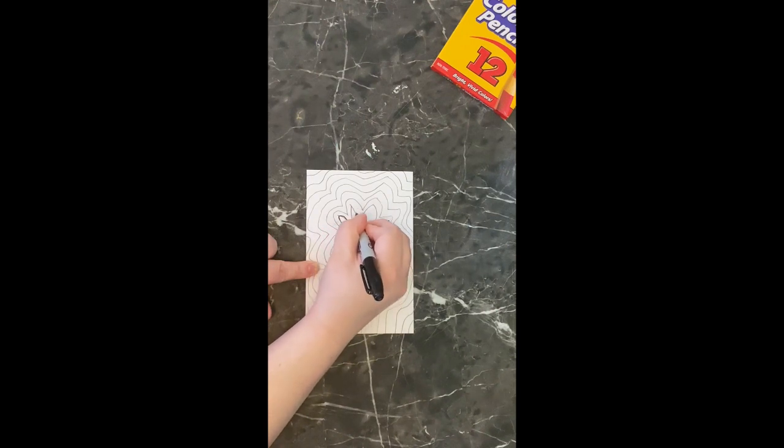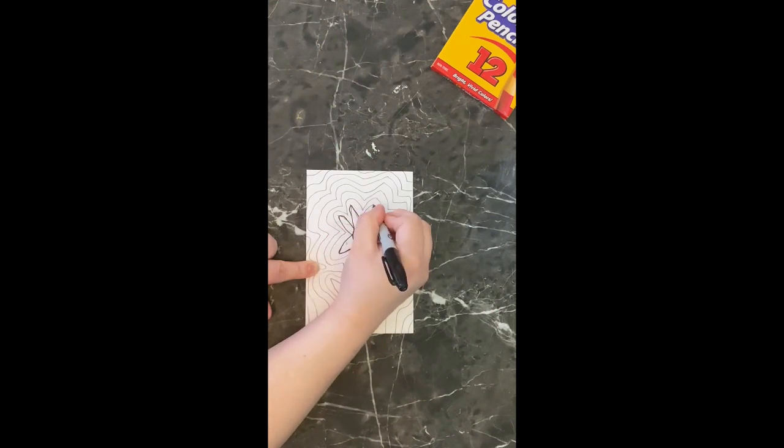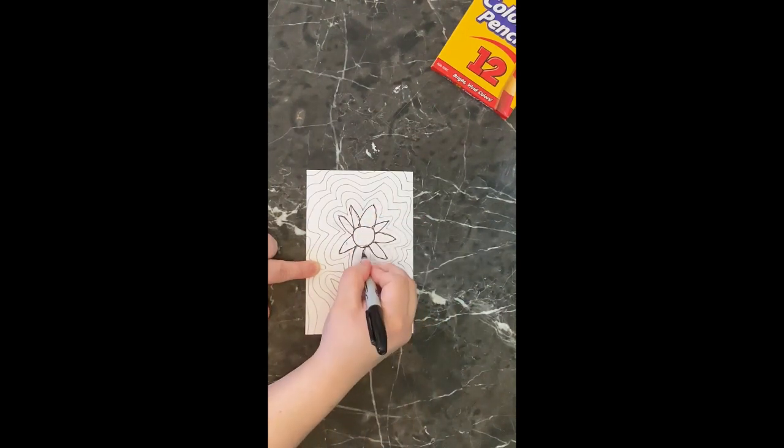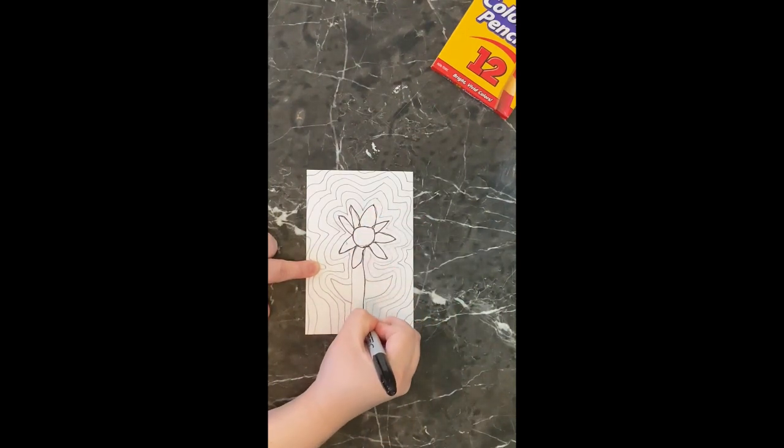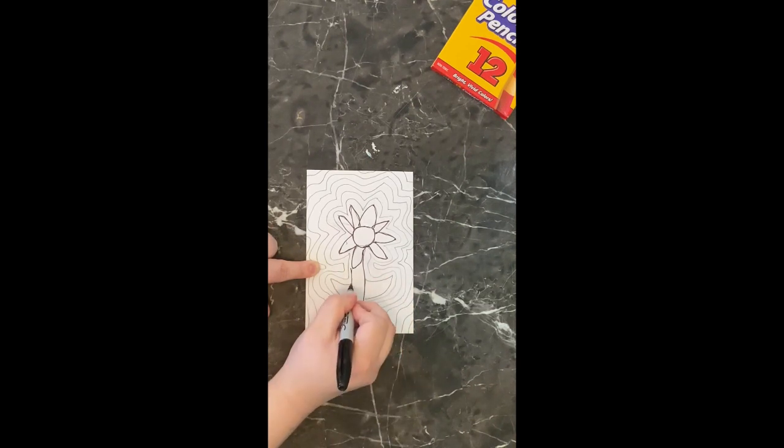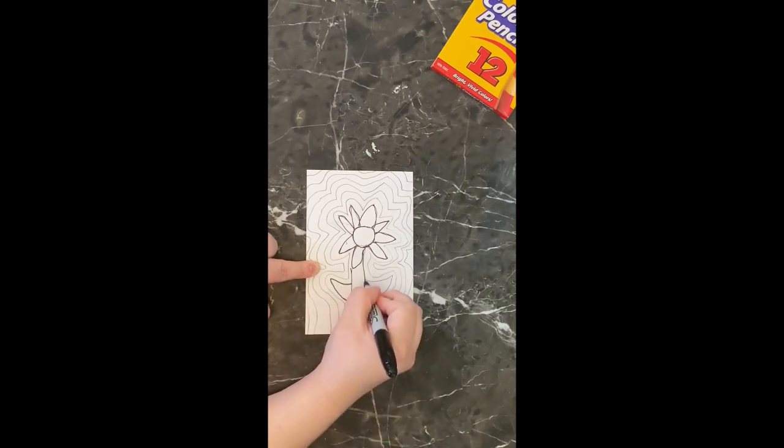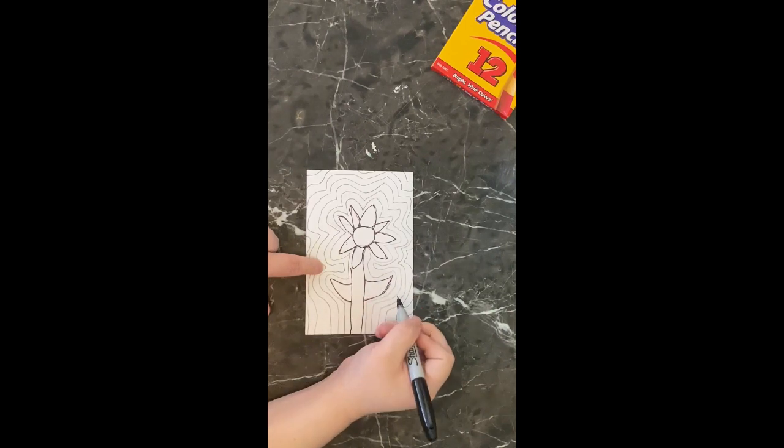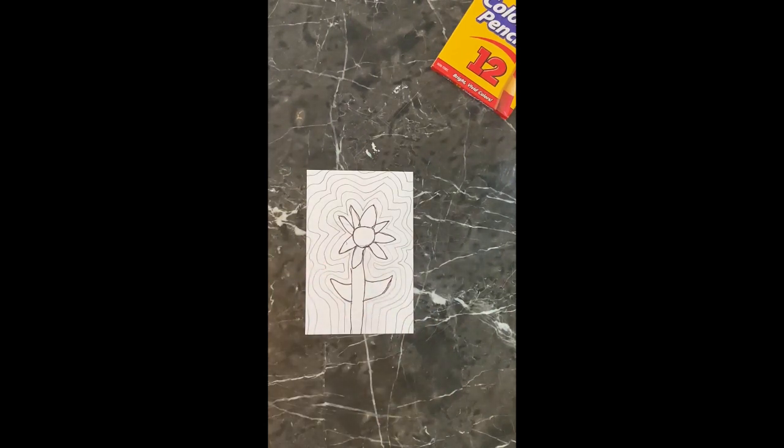That way your picture will really pop when you're done. Again, I'm just going to show you this one side. Let's go ahead and trace the flower part. All you're doing is just giving definition to your lines. It's really going to stand out when it's done. I want you to get all of your lines traced and then meet me back here for the next part.